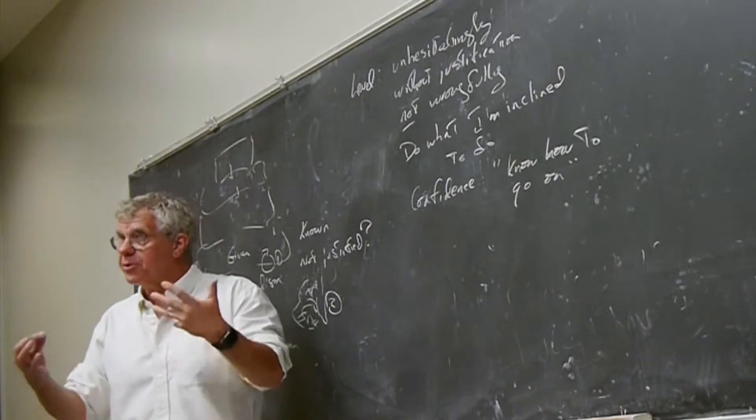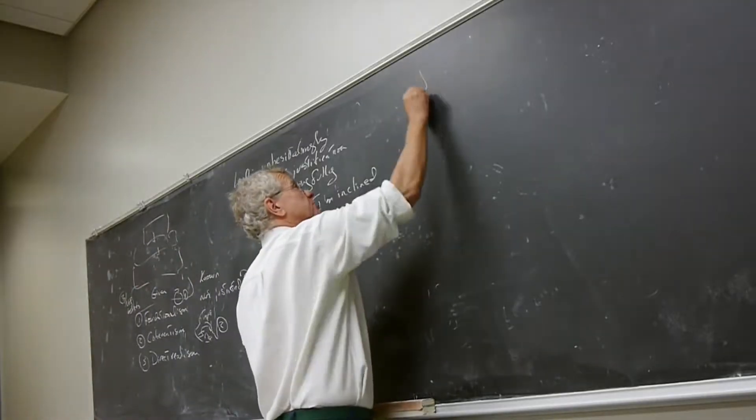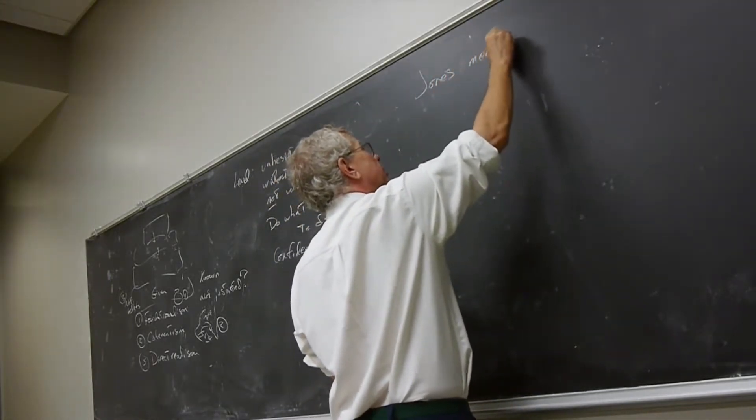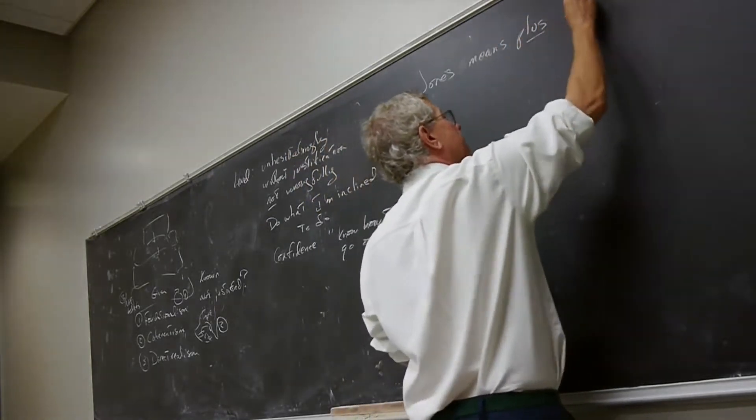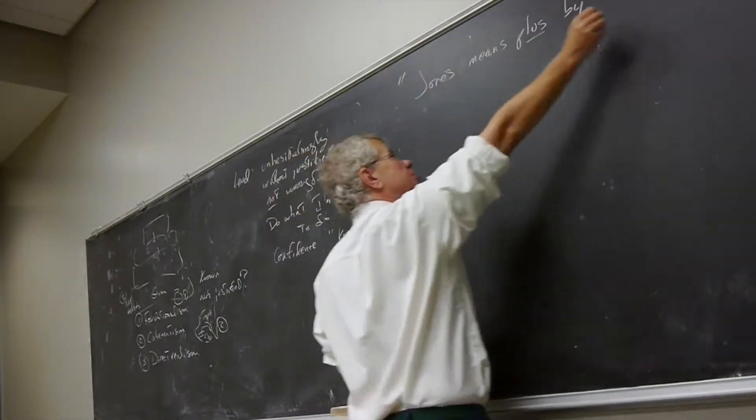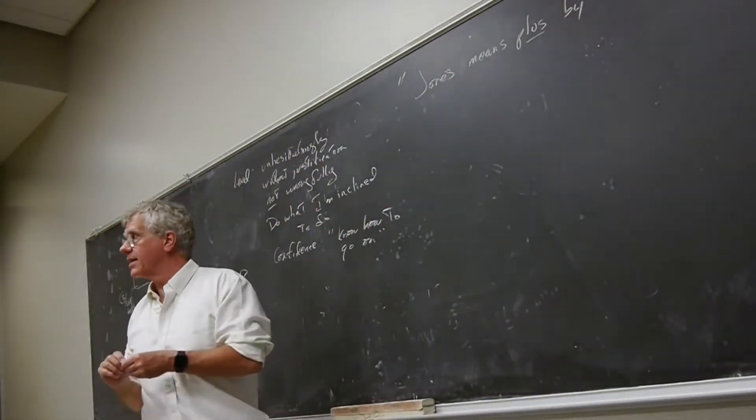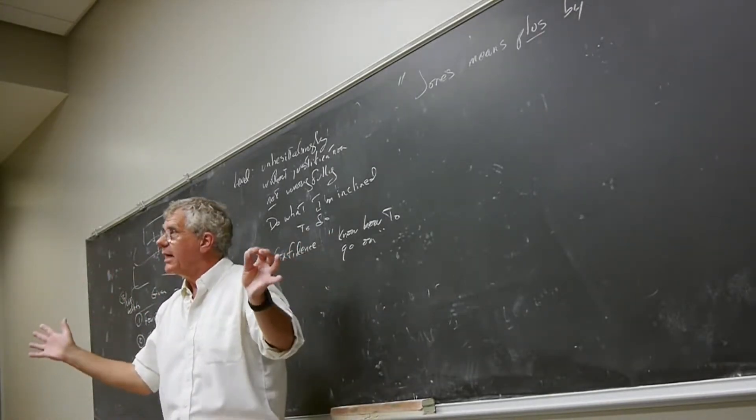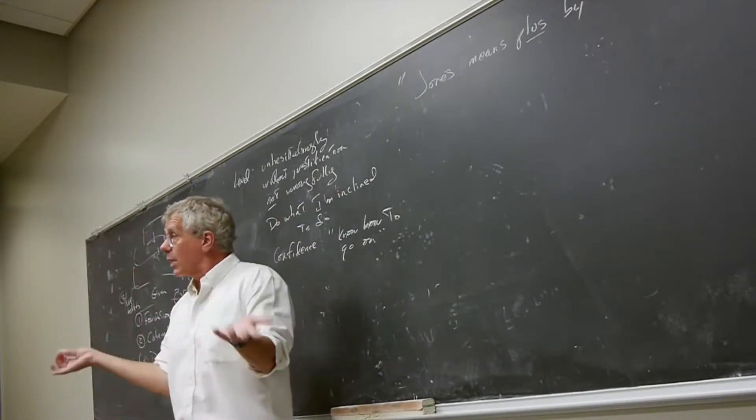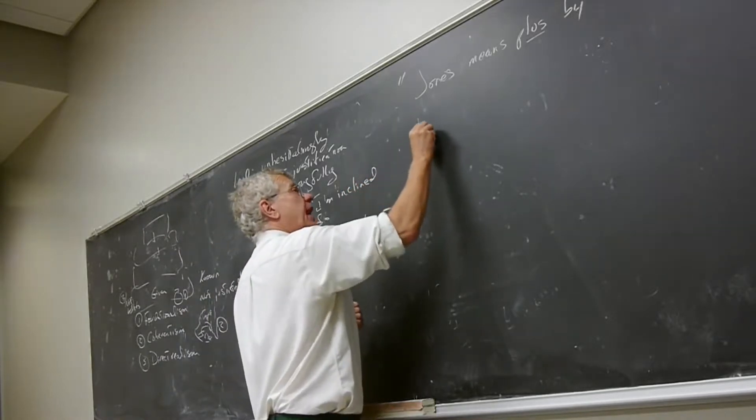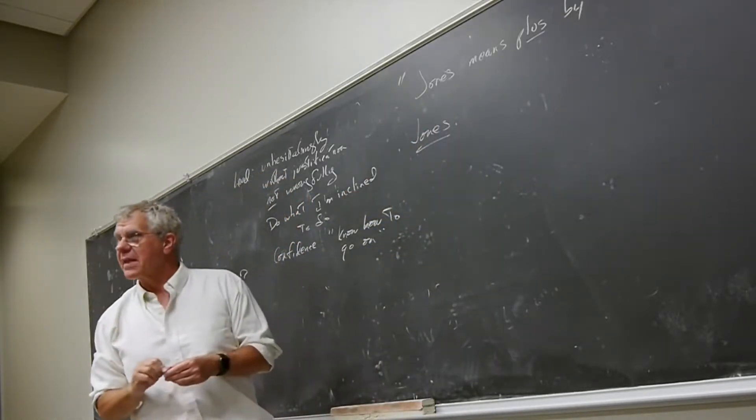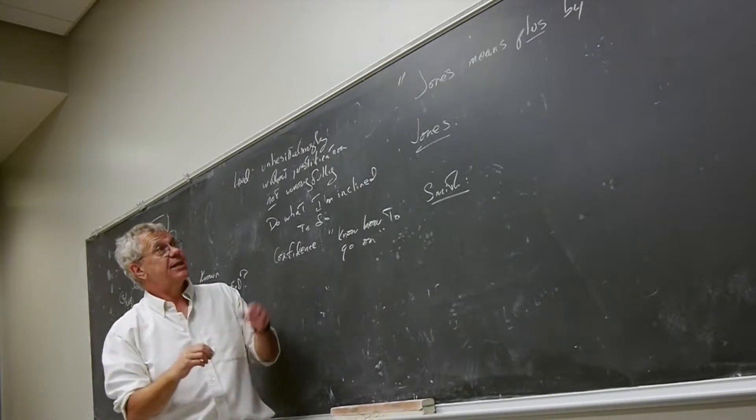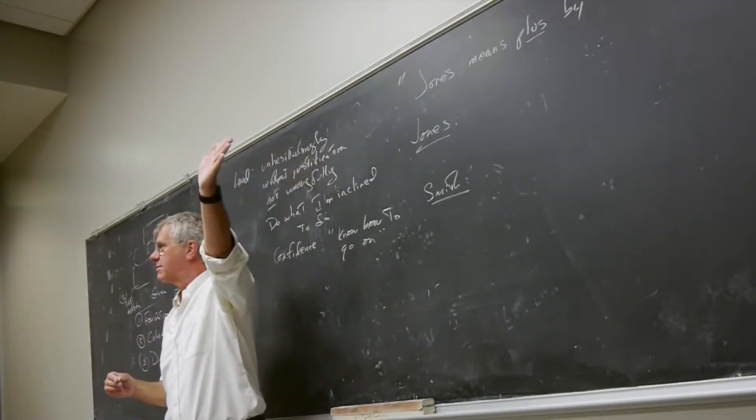And so the way Kripke puts it is this. Suppose we've got Jones, and the claim is this. Jones means plus by that symbol. And we're trying to figure out the assertability conditions for that. Remember, that's not going to get truth conditions. We're going to throw away the Tractarian model of language. Instead, we ask, under what conditions is that assertable? And now, it really becomes two questions. Under what conditions is it assertable for Jones? And then, under what conditions is it assertable for Smith?